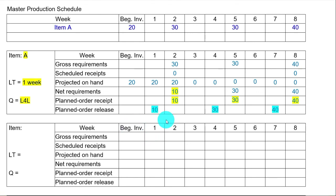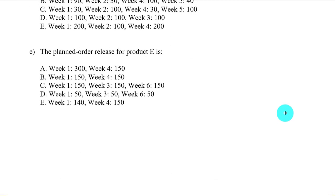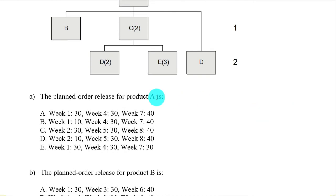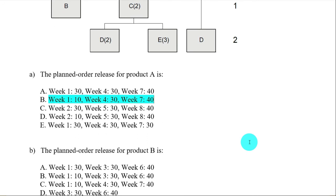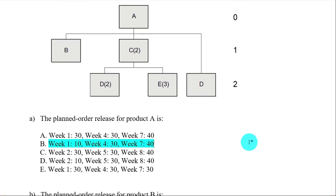Now we're done with item A. The planned order releases for item A are: week 1 for 10, week 4 for 30, and week 7 for 40. So the answer is B. I'll stop this video here and we'll continue with items B, C, D, and E in the next video. Thank you.